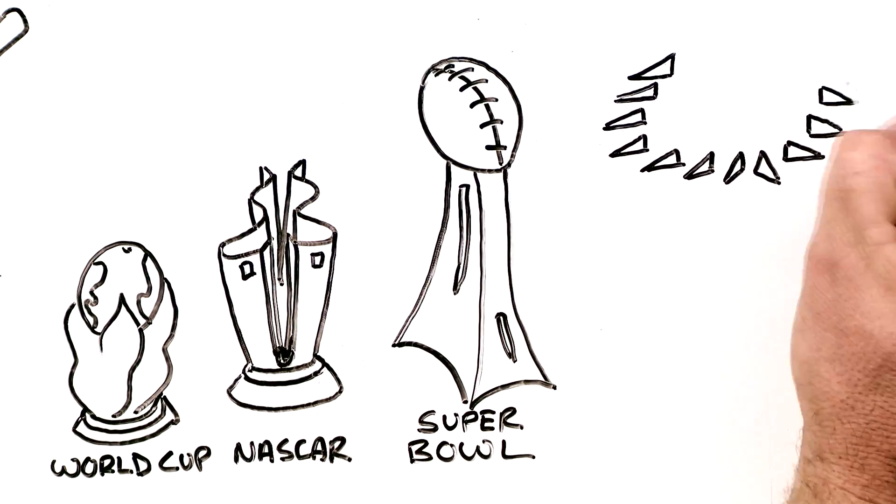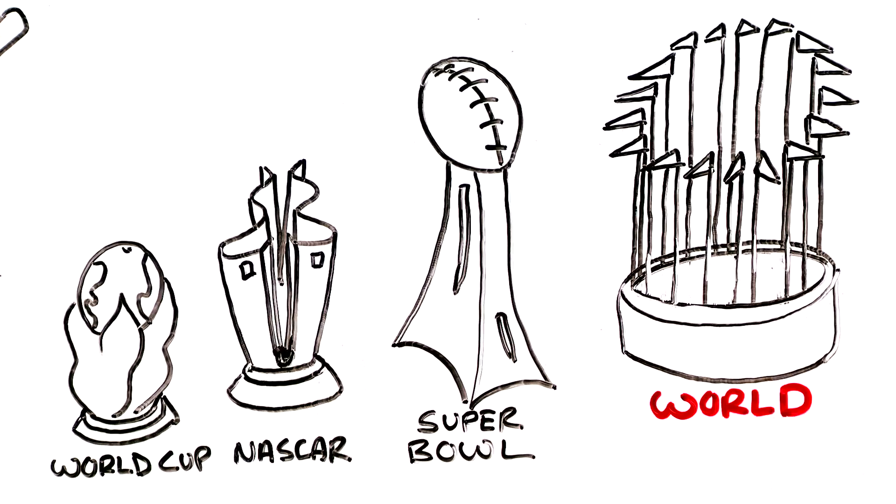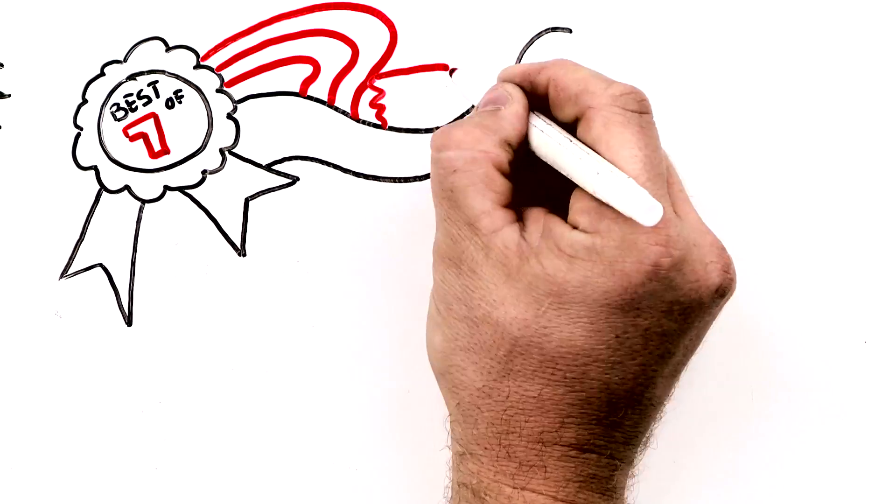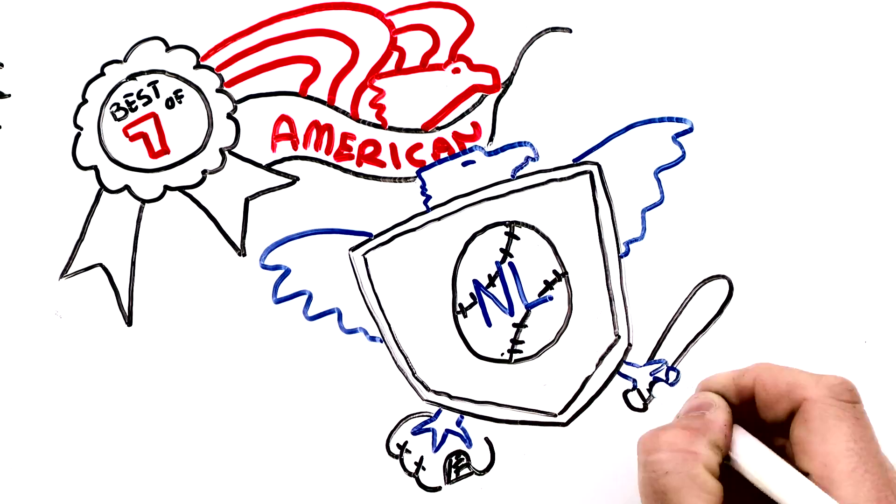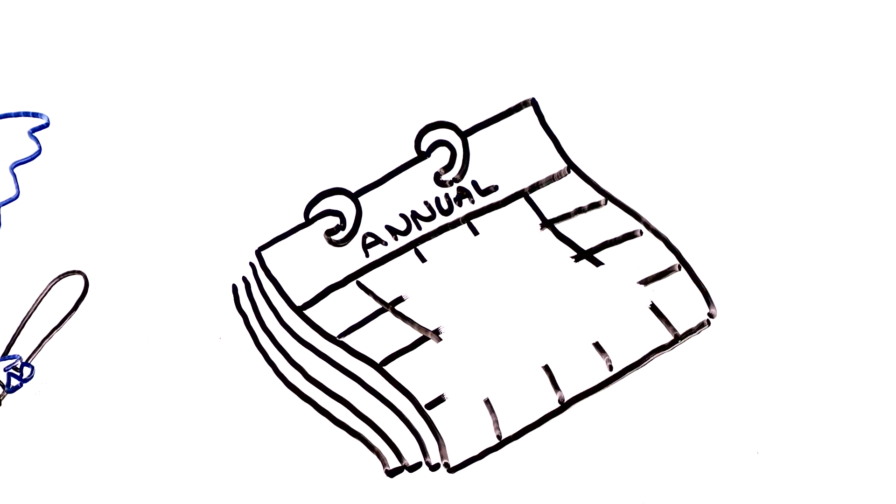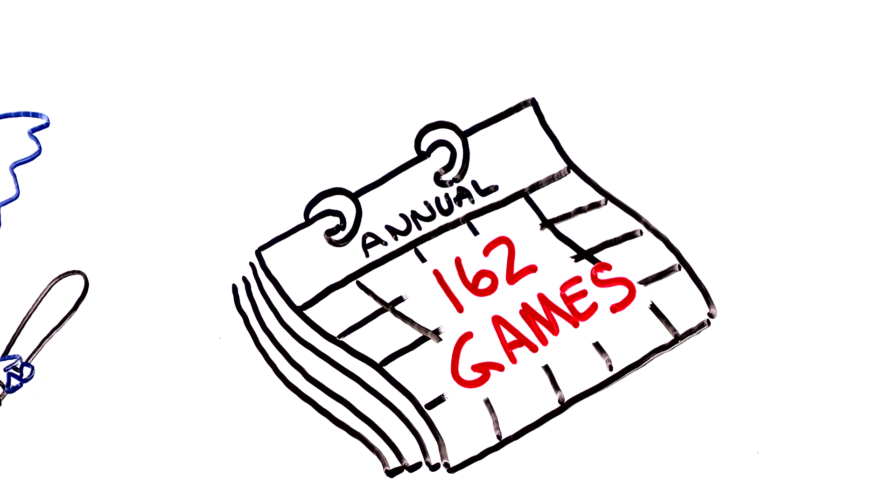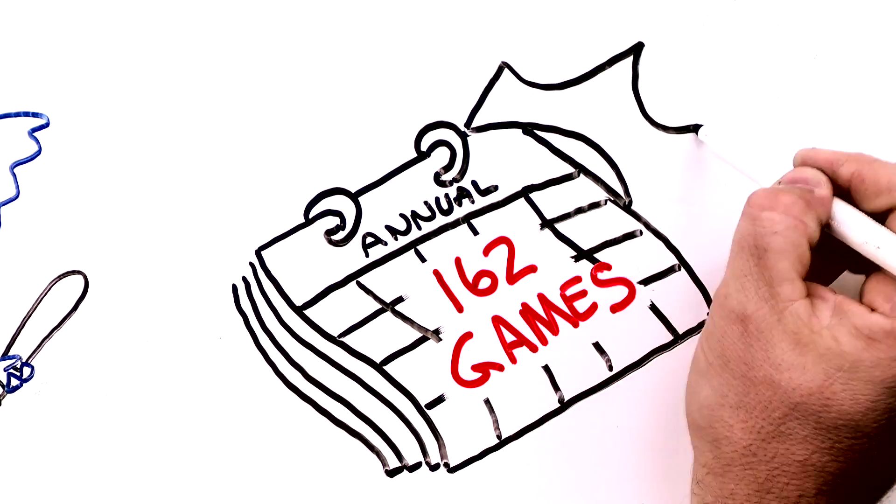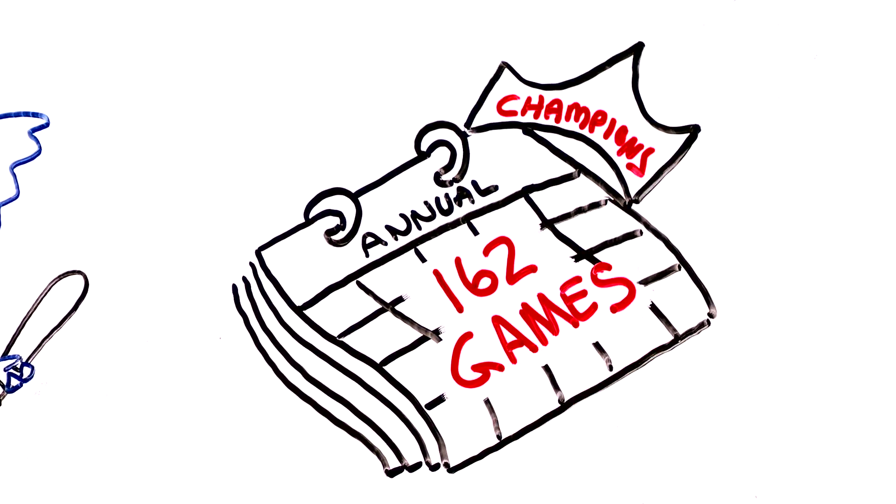Every sport has its pinnacle, but none is coveted as baseball's World Series, a best-of-seven series that's played between the American League and National League. This is the annual culmination of 162 regular season games for Major League Baseball to be crowned world champions.